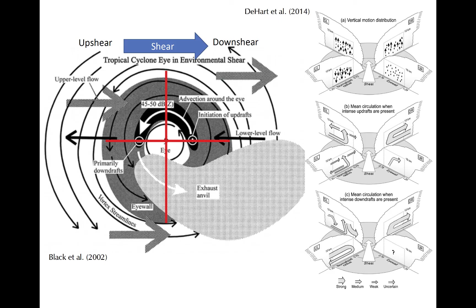The frameworks viewed so far are for idealized axisymmetric tropical cyclones, meaning they essentially have the same distribution in all quadrants. However, in nature, tropical cyclones can rarely even be approximated as truly axisymmetric, because vertical wind shear impacts the distribution of latent heating in the tropical cyclone. Consequently, the secondary circulation is often largely asymmetric, being stronger in one part of the cyclone than in another.